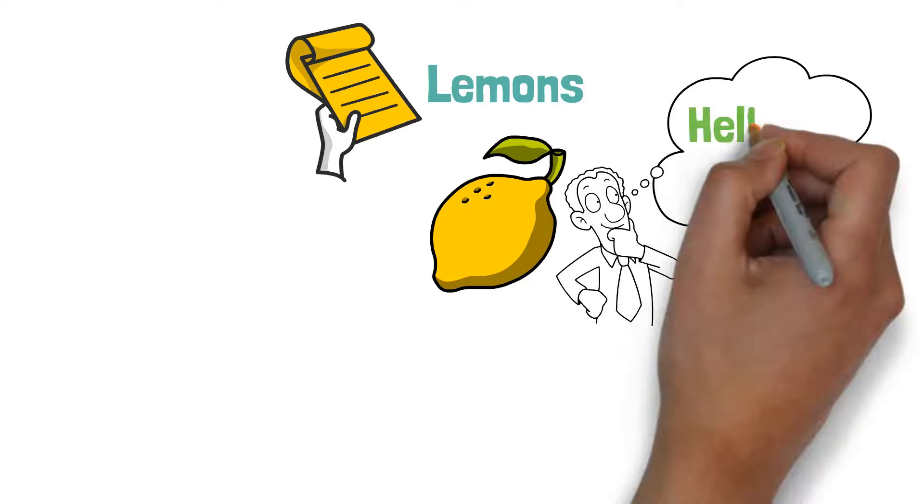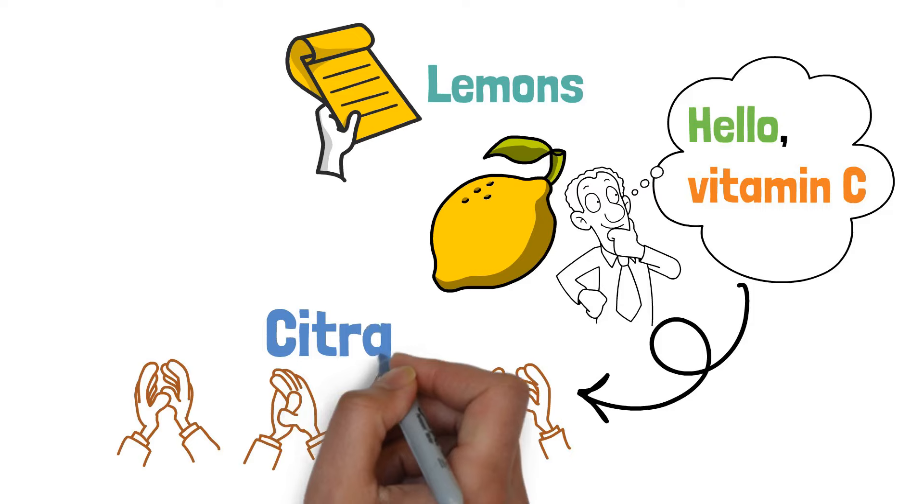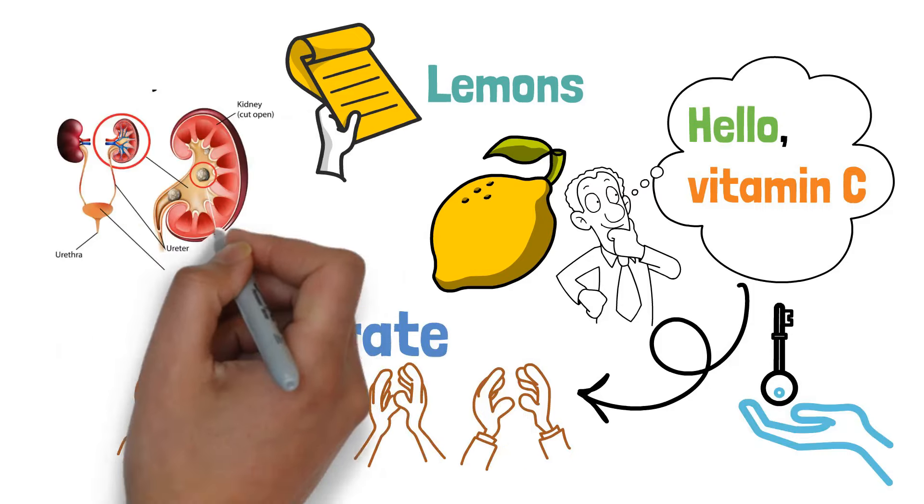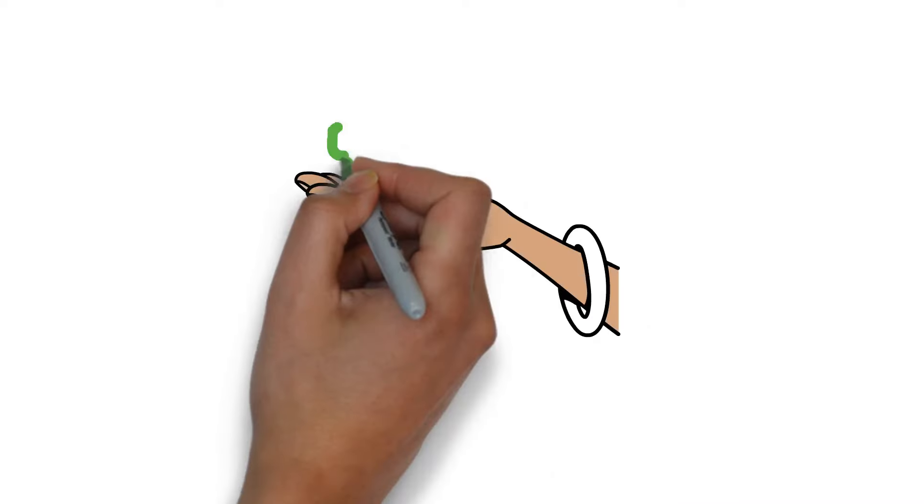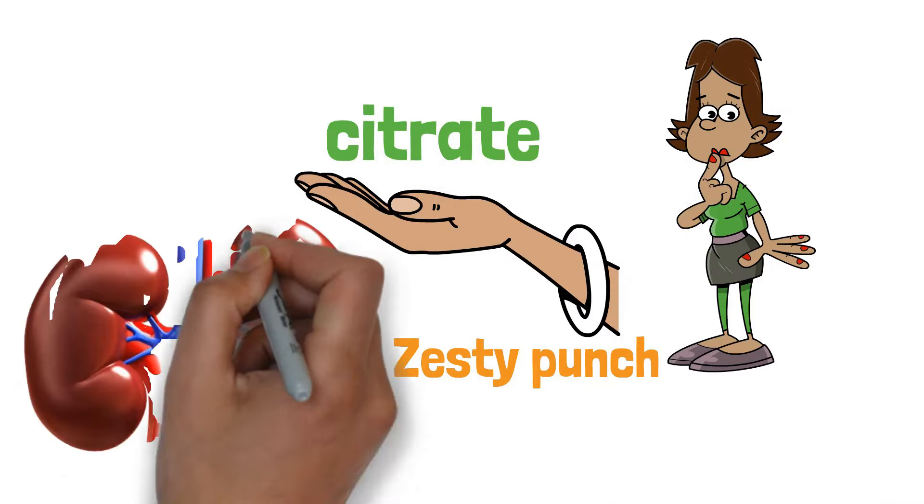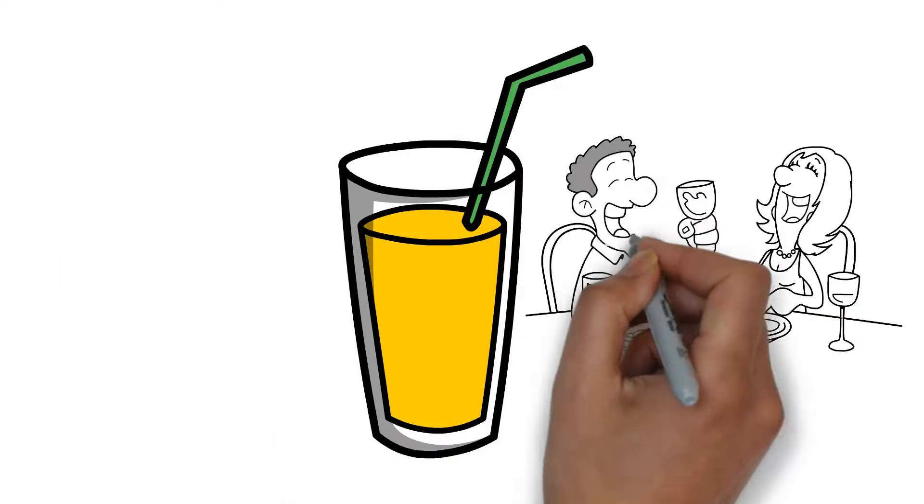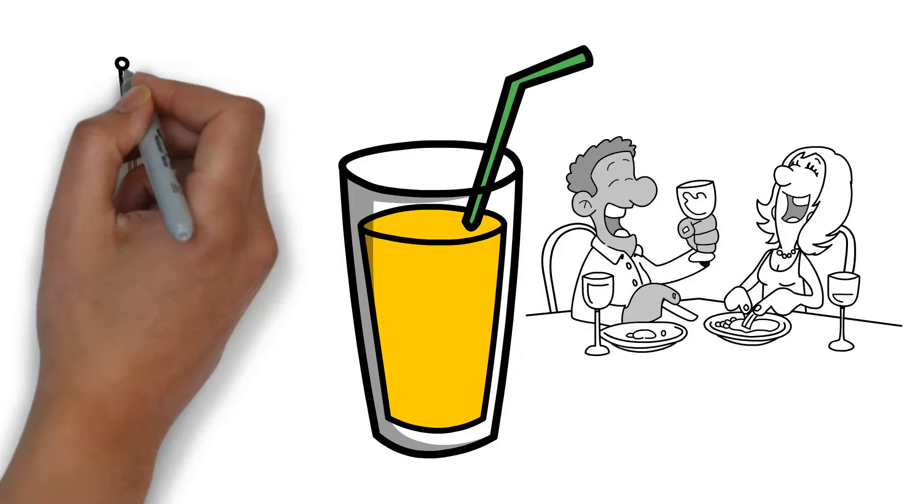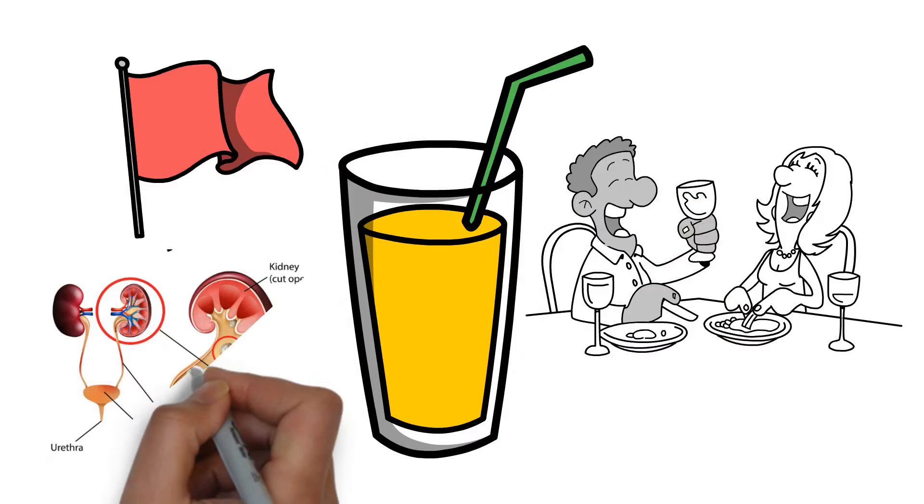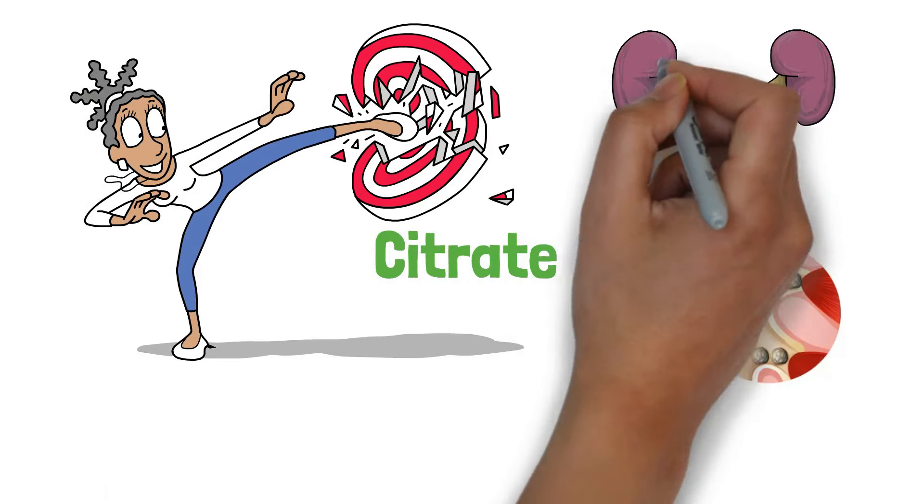Fruit three, lemons. Ever squeezed a lemon and thought hello vitamin C? Well there's more, how about a big cheer for citrate, a kidney secret weapon against stones. With their citrate richness, and boy do they bring a zesty punch to the kidney health party, this isn't just about adding a tangy twist to your water. It's about leveraging their natural citrate content which plays a crucial role in preventing kidney stones. Citrate makes it harder for stones to form by breaking down any party crasher crystals that want to settle in your kidneys.